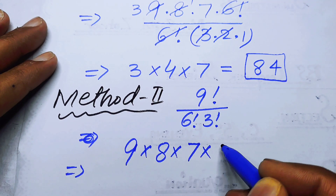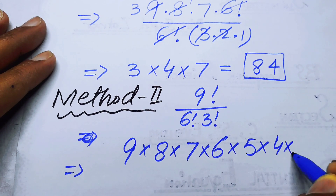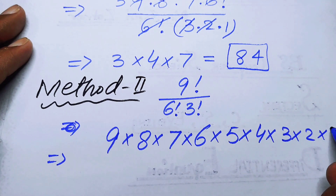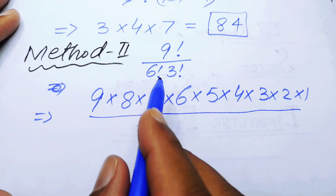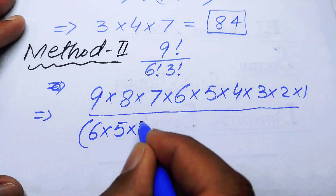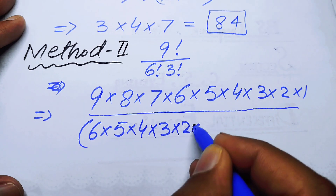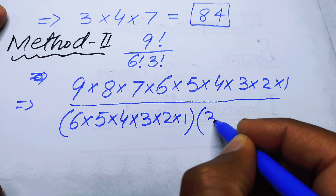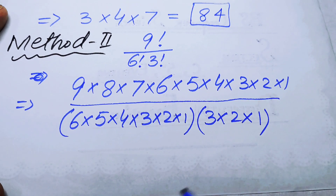...multiplied by six multiplied by five multiplied by four multiplied by three multiplied by two multiplied by one. In the denominator, we open six factorial as six times five times four times three times two times one, and three factorial as three times two times one.